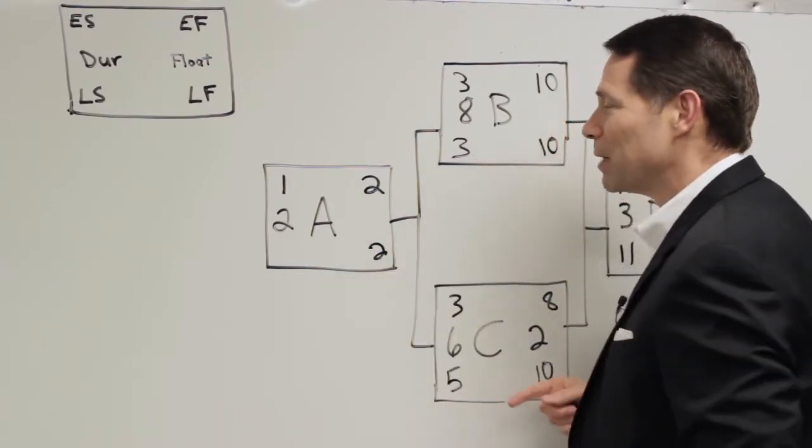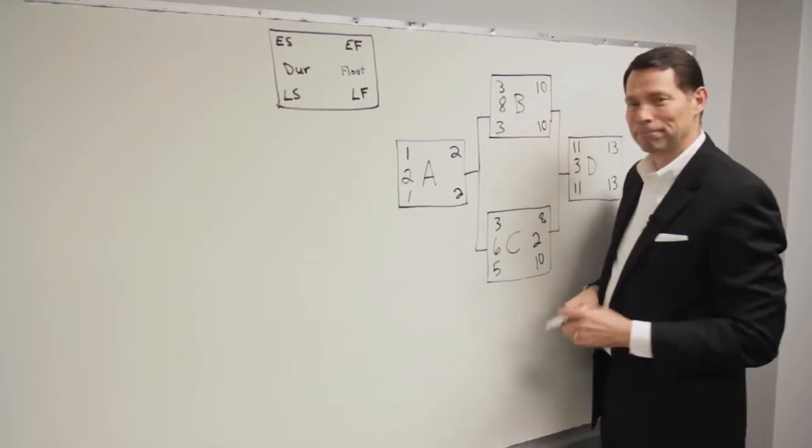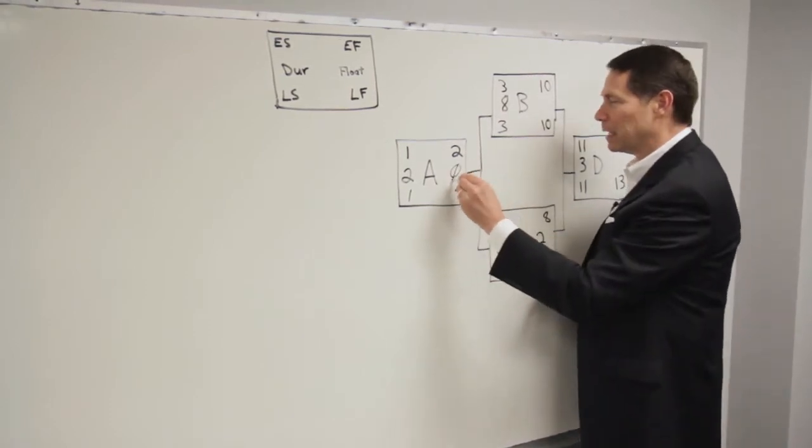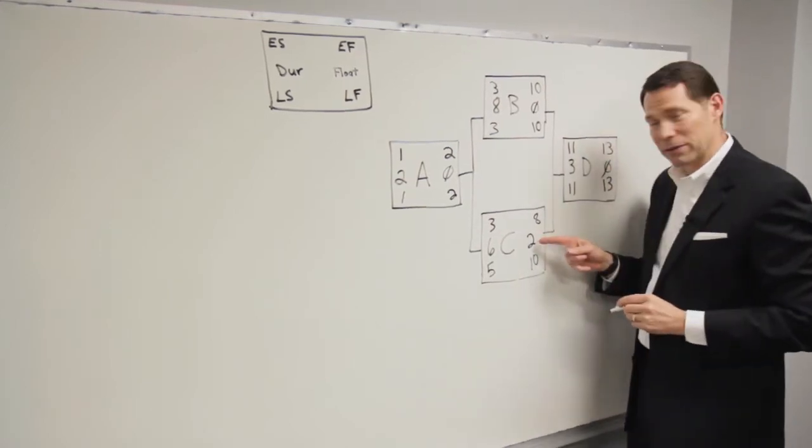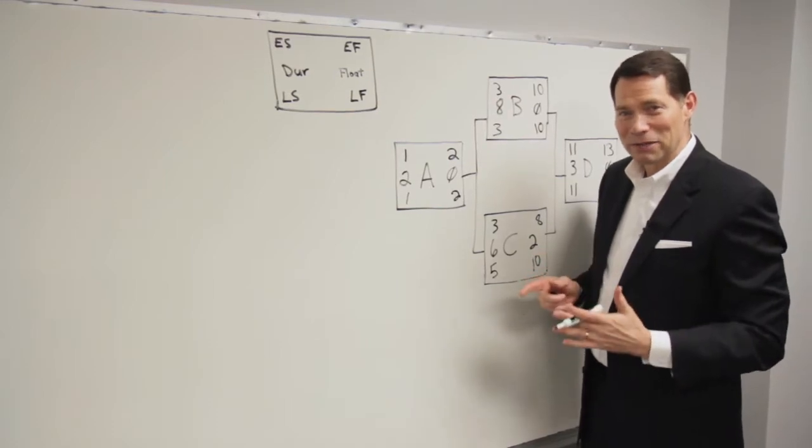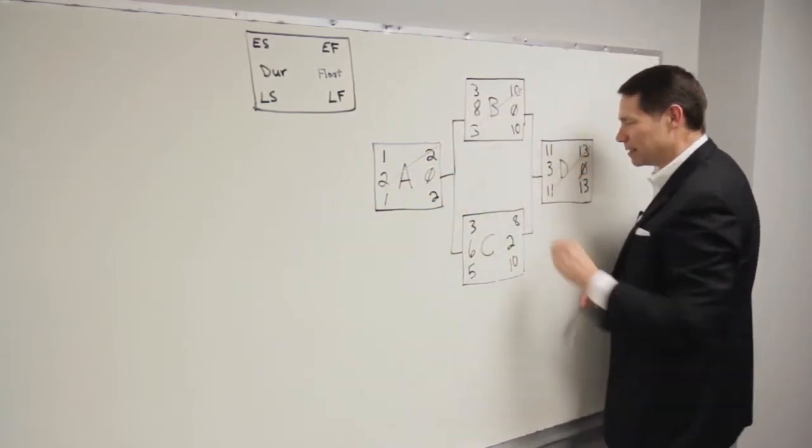I take a two. Take two minus two is zero, add one, it goes to one. Float or slack is the difference between these two. I've got no float up here. I've got no float here. I have two days of float. Now critical path is this series of tasks with no float. So my critical path goes like this.